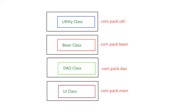To understand PreparedStatement we are going to create a simple application with four packages and four classes. The first package will be the utility package containing the utility class. The second will be the bean package containing the bean class or data model. The third will be the DAO package containing the data access object class, and the fourth class for user interaction will have the main method and will be placed in the main package.